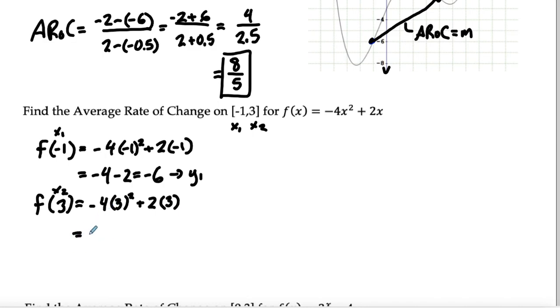That's going to be negative 4 times 9. Always square it first. 3 squared is 9 times negative 4 is negative 36 plus 6 equals negative 30. And that's going to be my y2.